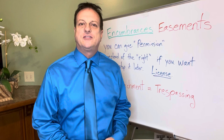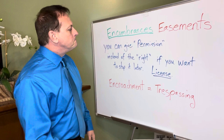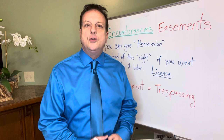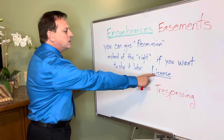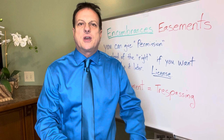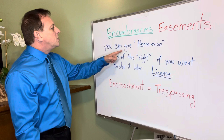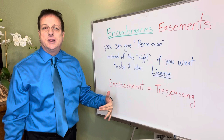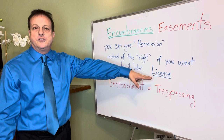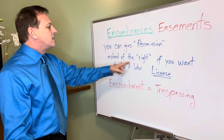For example, you have somebody who wants to hunt on your property and you don't want this to turn into an easement situation, so you give them a license to do it. Similarly, if someone wants to go camping on your property every year and you want to keep it temporary, you can give permission instead of the right. You can give a license, which is something you can revoke later. That's how you give permission instead of the right — through a license. That could be a test question.